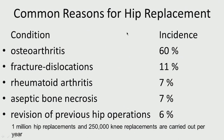Metallic biomaterials are also widely used in hip replacement. The main causes requiring hip replacement include arthritis, fracture dislocation, rheumatoid arthritis, aseptic bone necrosis due to infections, and revision from previous operations. About 1 million hip replacements and 250,000 knee replacements are carried out per year in the US alone — demonstrating the enormous role of metallic biomaterials in this area.